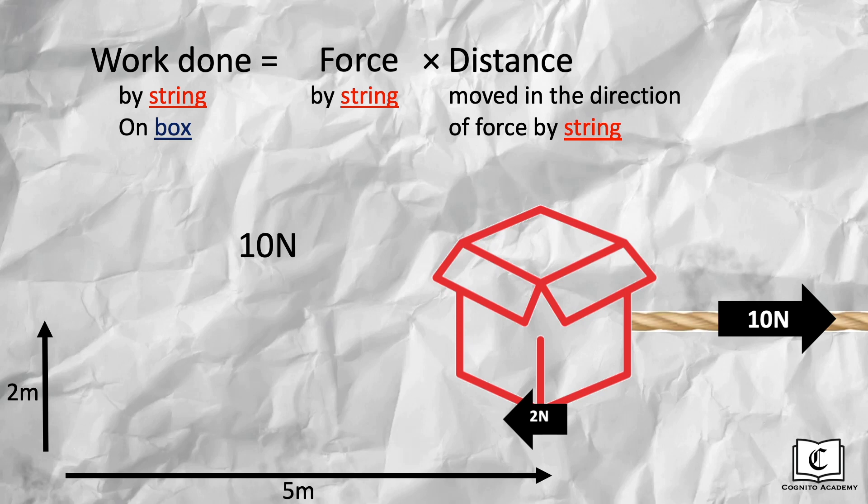Let's take a look at the elaboration for distance. It states, distance moved in the direction of the force. Which means the distance we choose must be in the same direction as the 10N we use for the force, so the distance will be 5 meters, giving us a work done of 50J again.